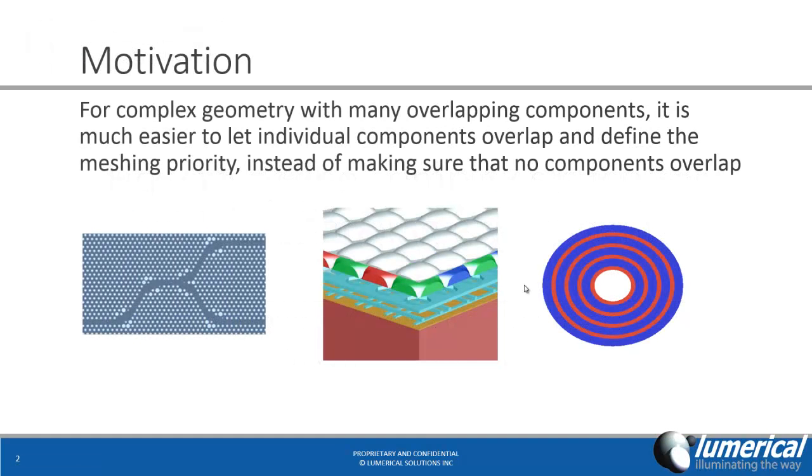Many applications require complex geometries with many overlapping components. For example, here I have a photonic crystal waveguide structure where many holes of different sizes are etched into the substrate, or I have a CMOS image sensor which has many layers and many overlapping materials. In all these cases, it's much easier to let individual components overlap and define the meshing priority instead of having to make sure that nothing overlaps.